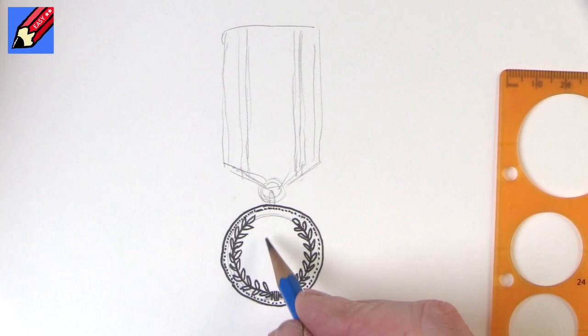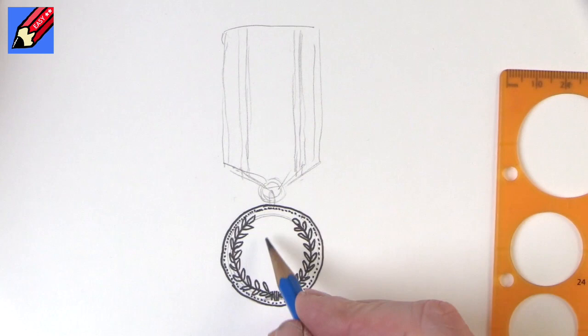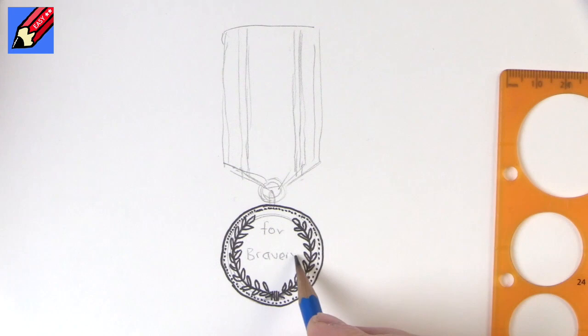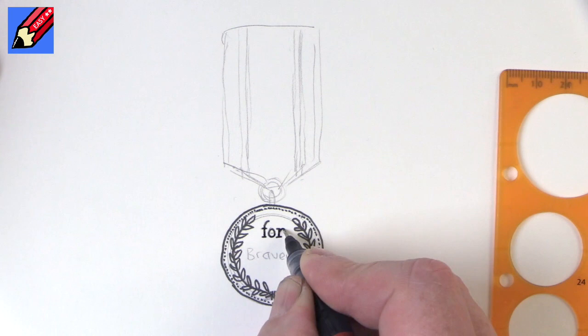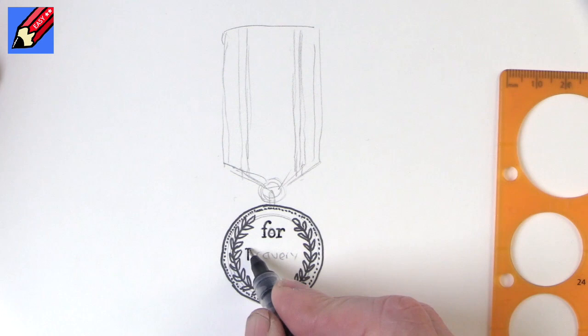And then we'll want it to say something like 'for bravery' and we want it to have that kind of engraved look. So we're going to put these little bits at the top and the bottom of the letters, a little blob at the top there, and we come around like that. And then just that extra little bit on the letters and those are called serifs.